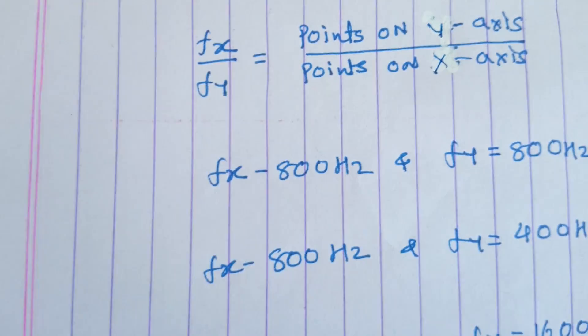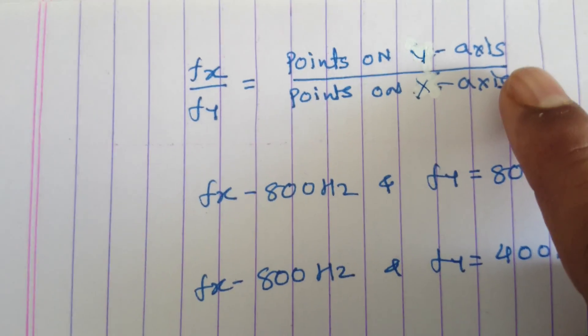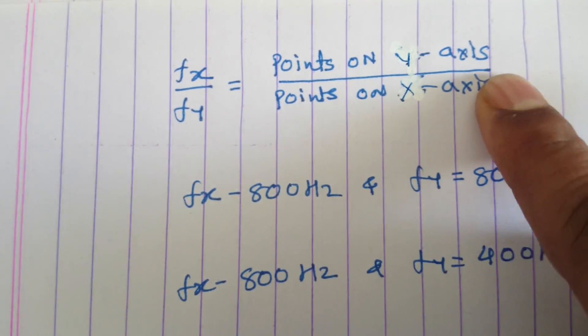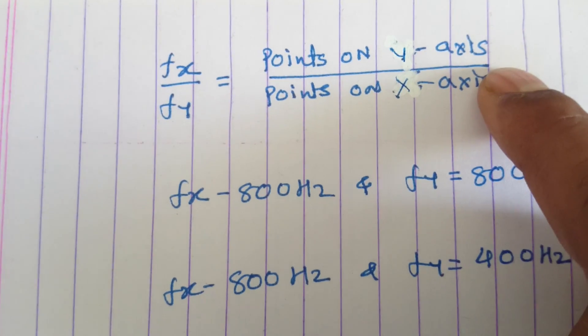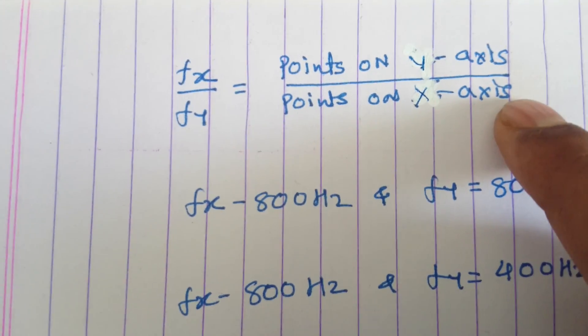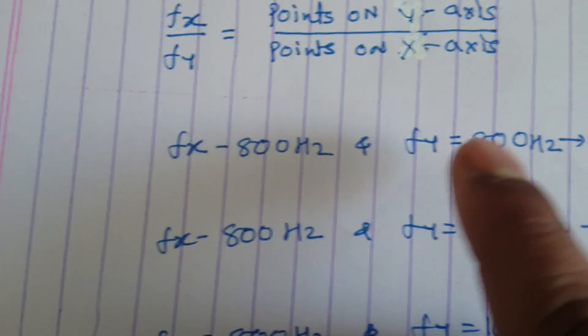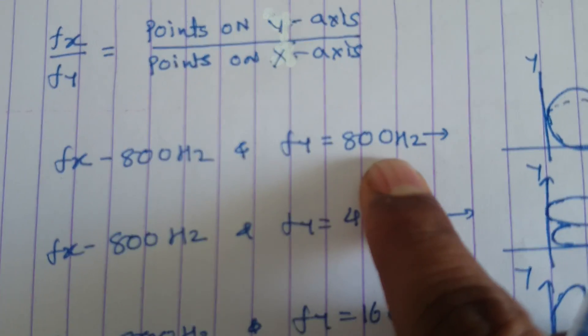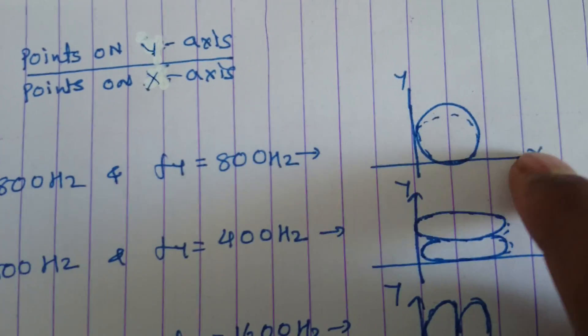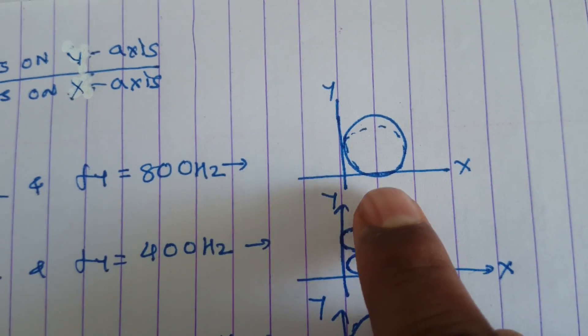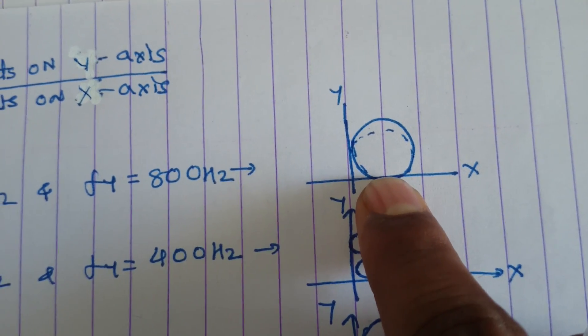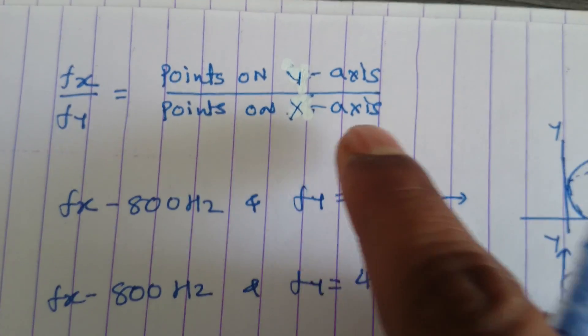So this is Y and X. Now we have to identify the number of points on the Y axis of the pattern and the number of points on the X axis of the pattern. If FX is 800 and FY is 800, then the pattern is like this — there is one point on the X axis and one point on the Y axis, so by this relation it is equal.